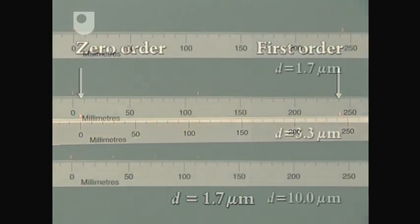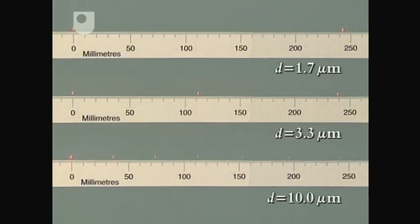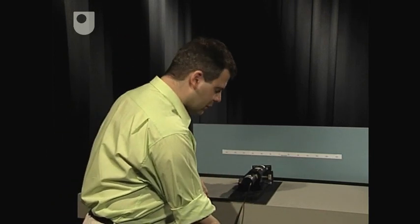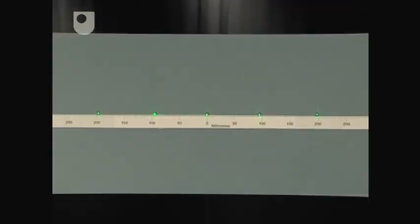Here are all three diffraction patterns displayed together from the three different gratings. Now I'm going to illustrate how a different wavelength alters the diffraction pattern. I've put the original 300 lines per millimeter grating back but now I'm going to use the green laser beam. So let's look at the diffraction pattern now.